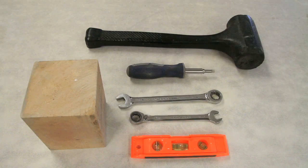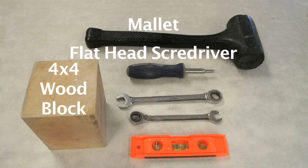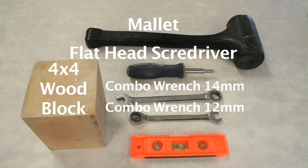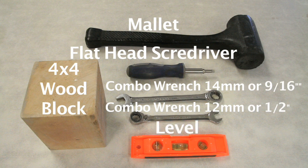Here are some of the tools that will be helpful when installing your power arm: a mallet, a flat head screwdriver, a 4x4 wood block, a 12mm and 14mm combo wrench, or a half inch and 9/16 inch combo wrench. You may also find a level helpful.